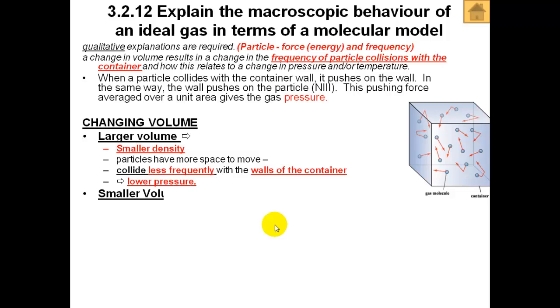And with a smaller volume, it's the opposite. If the wall is pushed in like a piston to reduce the volume, we have a greater density. The particles will have less space to move. They will start to collide more frequently with the walls of the container, which means a higher pressure.